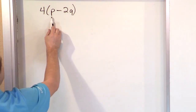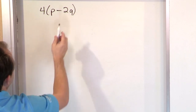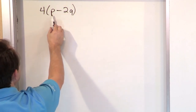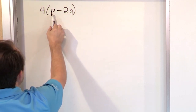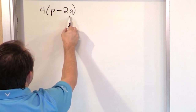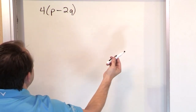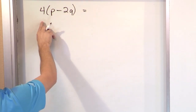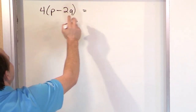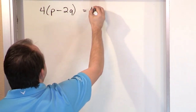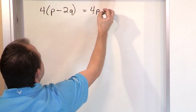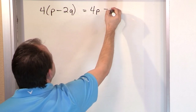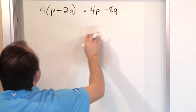You can see here that you have something inside the parentheses. You would normally work on that first for the order of operations. However, these are unlike terms — you have a p term and a q term, so I can't really subtract them. What I do have is a 4 on the outside, which I can distribute in. 4 times p is 4p. The minus sign comes along for the ride. 4 times 2 is 8, and you have 8q.